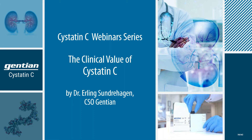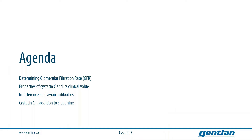Cystatin C was Gentian's first product, launched in 2006. I will first give a short summary of the determination of glomerular filtration rate, often abbreviated to GFR. I will then focus on the clinical value of the Cystatin C protein and its properties, before moving on to the topic of interference and avian antibodies. Lastly, I will talk about the benefits of adding Cystatin C to creatinine in clinical practice.